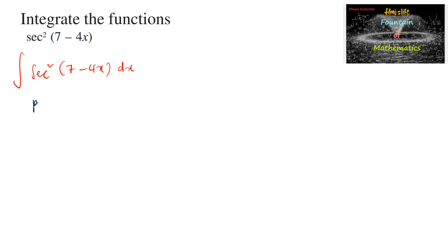So let us substitute or put 7 minus 4x is equal to t. So differentiating with respect to x, we have minus 4 dx is equal to dt, or dx is equal to minus 1 upon 4 dt.